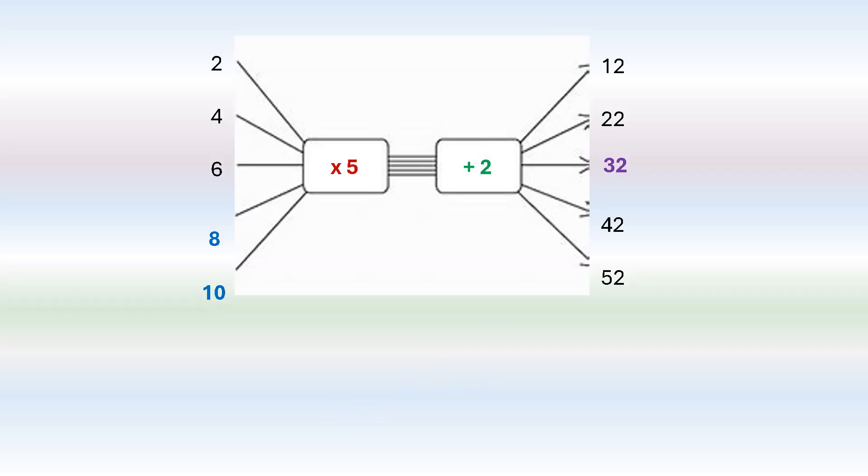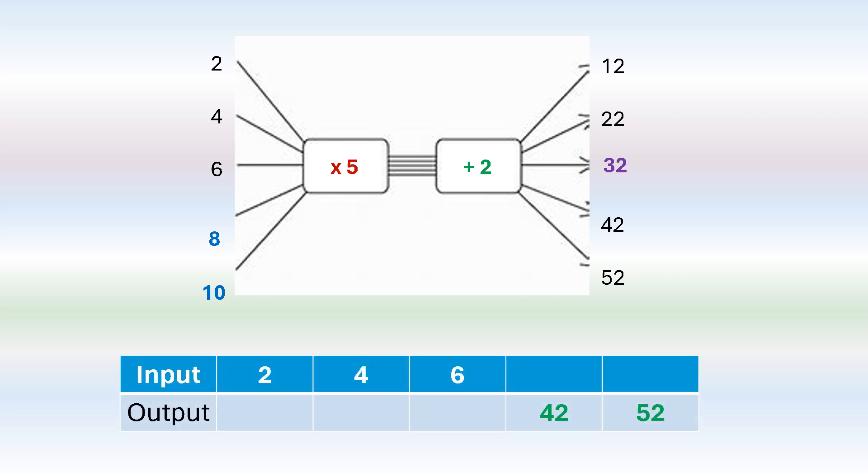Now let's look at how we're going to take this completed flow diagram and write it as a table. Now we have certain input numbers and we have missing output numbers, but we have two output numbers and two missing input numbers. So we're going to write our rule at the top. So we're going to say 5. 2 times 5 is 10 plus 2 is 12. 4 times 5 is 20 plus 2 is 22. 6 times 5 is 30 plus 2 is 32.